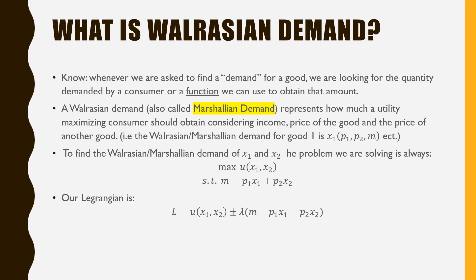What is Walrasian demand? Whenever we're asked to find the demand for a good, we're looking for the quantity demanded by a consumer, or a function we can use to obtain that amount. A Walrasian demand, which is also called a Marshallian demand, represents how much a utility-maximizing consumer should obtain considering income, price of the good, and price of another good. That is, the Walrasian or Marshallian demand for good one is x1 as a function of the price of good one, price of good two, and income m.